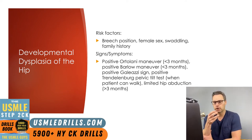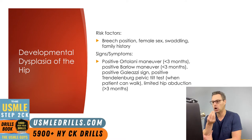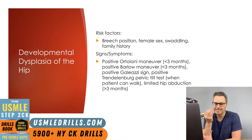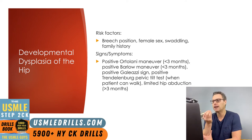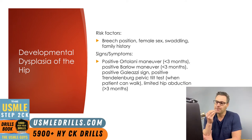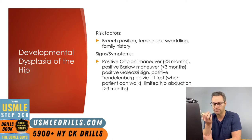The next maneuver, also performed in infants under three months of age, is the Barlow maneuver. This involves moving the hips into mild adduction and applying a slight forward pressure. When the Barlow maneuver is performed, if a subluxed or dislocated hip is present, a palpable clunk is felt, leading to a positive test.